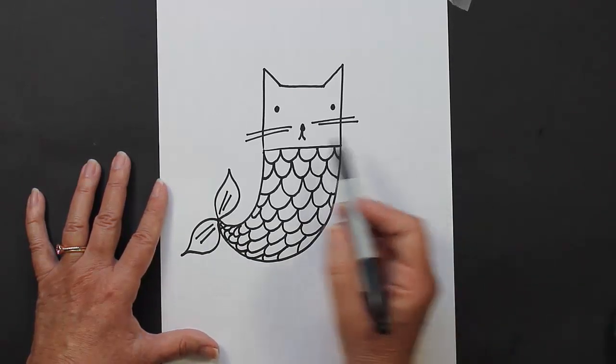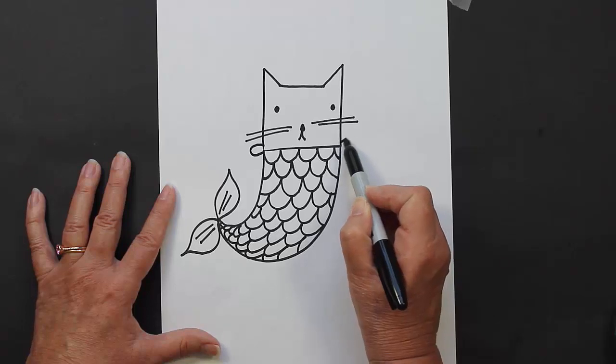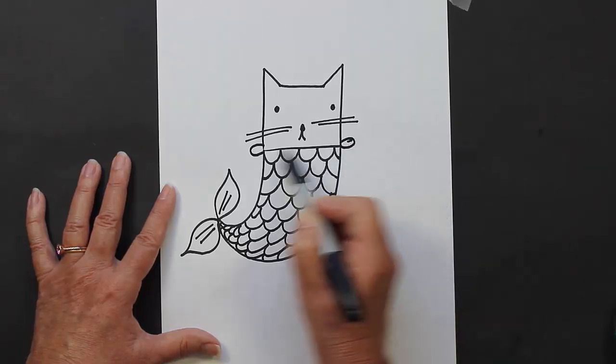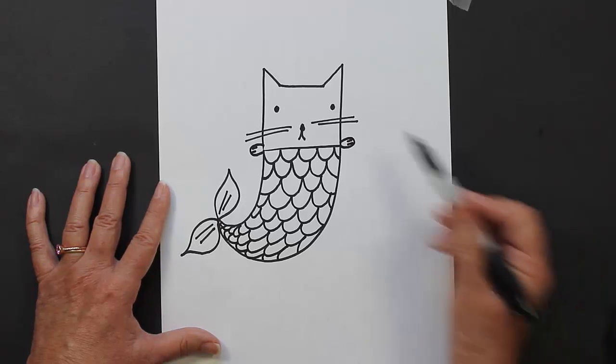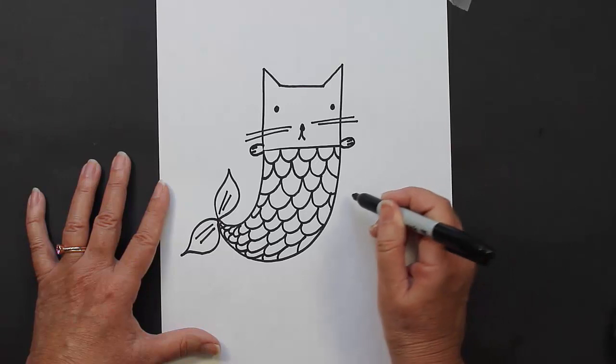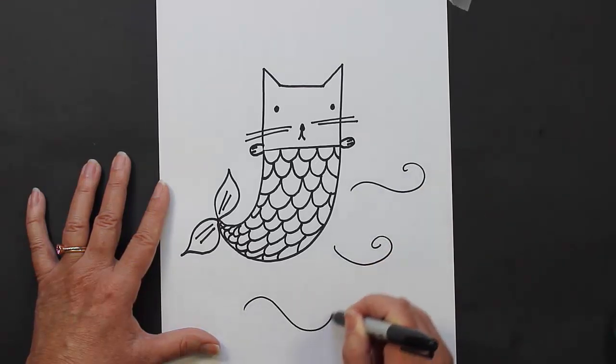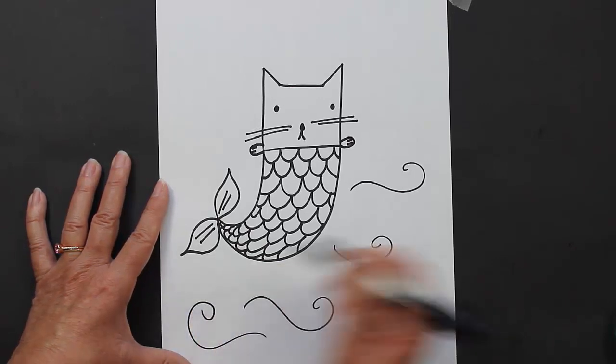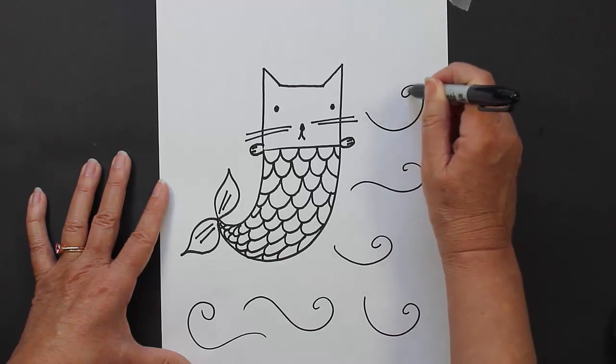Now let's make a couple of little paws sticking out of the side. There we go. If you'd like to put a little bow or if you'd like to put a few little waves showing that our mermaid cat is in the water, that would be a good idea - it's up to you.